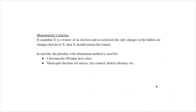This leads us to another fairness rule: the monotonicity criterion. If candidate X is a winner of an election, and in a re-election the only changes in the ballots are changes that favor X, then X should still be the winner. This seems like common sense — if you win and I give you more votes, you should still win. Plurality with elimination can violate this criterion. In real life, plurality with elimination is used for choosing Olympic host sites, many municipal elections, and statewide elections in Maine and Alaska.